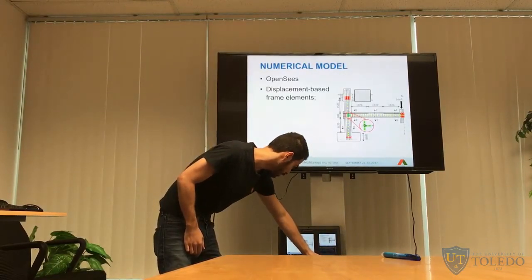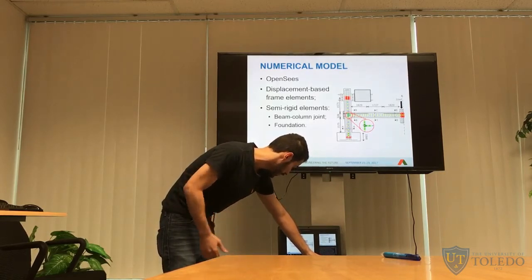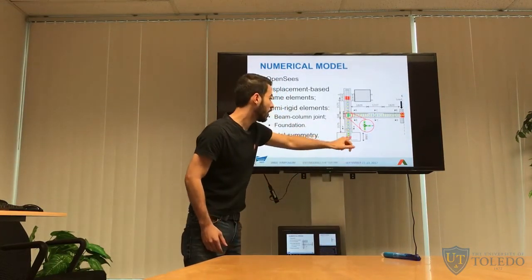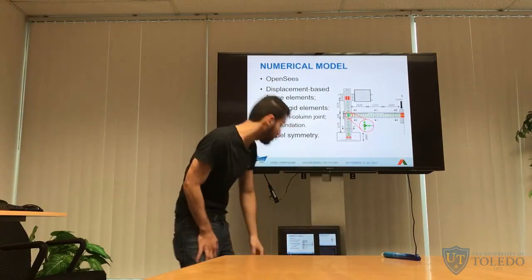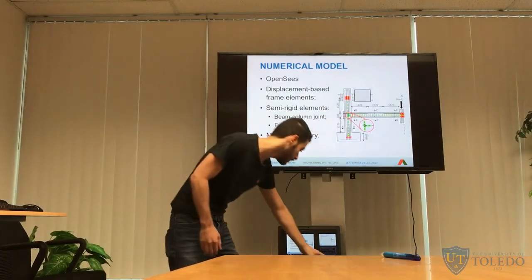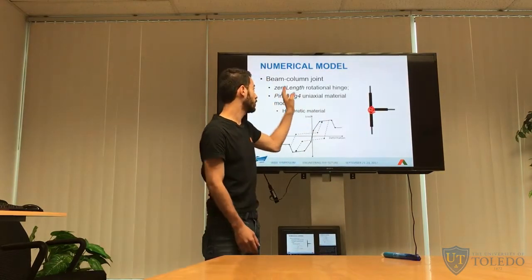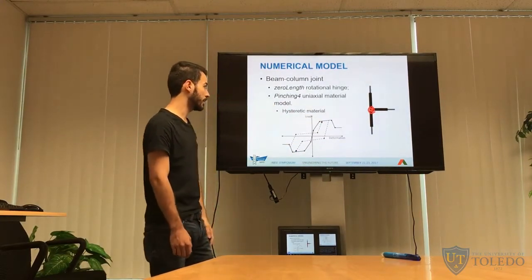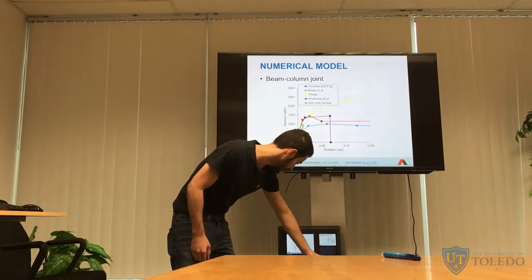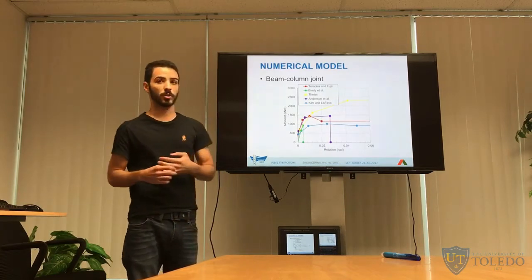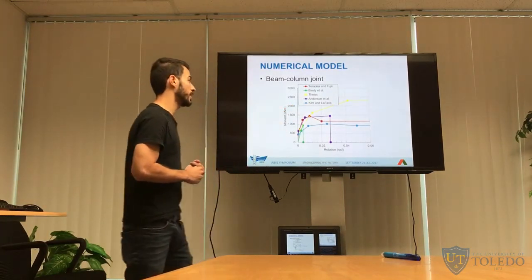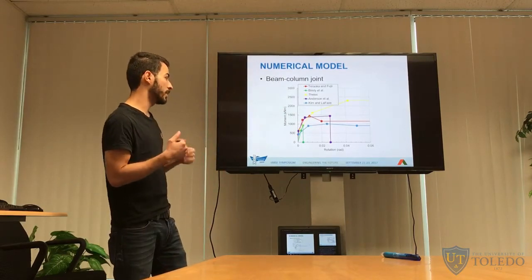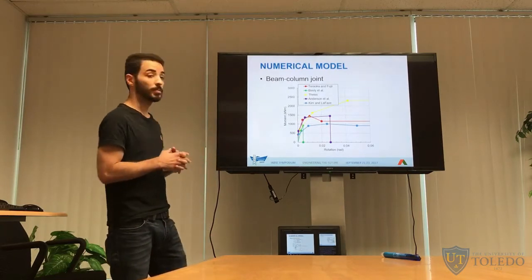The numerical model was developed in OpenSees using displacement-based frame elements. Semi-rigid elements are used for the beam-column joints (shown in green), as well as for the column-foundation intersection. Only half of the frame is modeled due to symmetry. The beam-column joint uses zero-length rotational hinges with the Pinching4 material model in OpenSees, which accounts for the cyclic behavior of the beam-column joint. The shear panel behavior is governed by four characteristic points, and we can see how each of the five theories calculates those points, giving good variability to assess their impact on structural response.